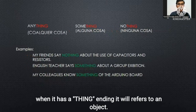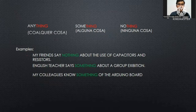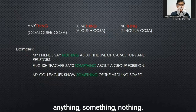When the pronoun has the ending '-thing,' it will refer to an object. The pronouns are: anything, something, and nothing.